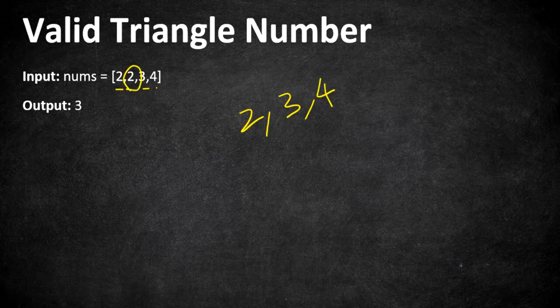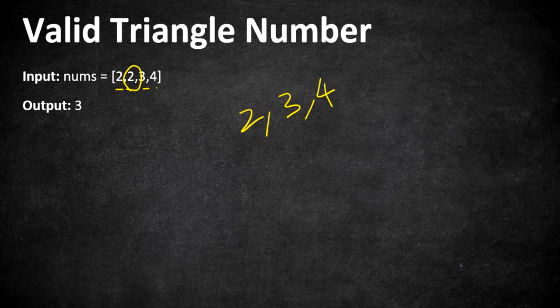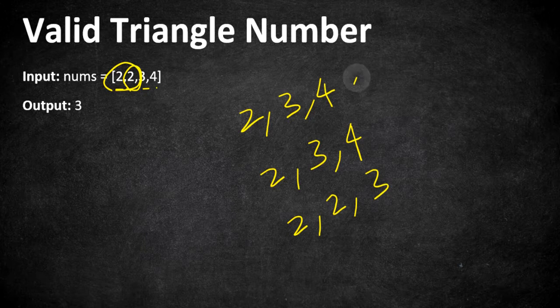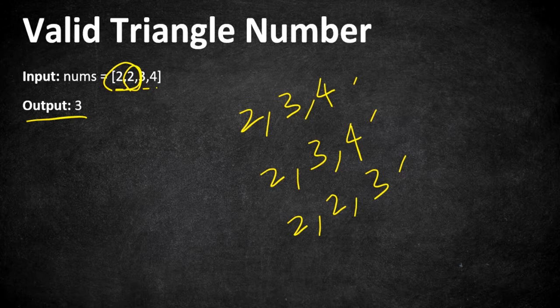Or picking the first two 2s and then 3. These are the three triplets that we can pick for the output. There can be one more chance of combination, that is 2, 2, 4, but this cannot be forming a triangle.